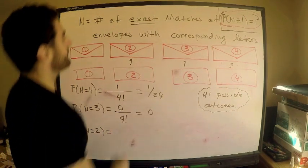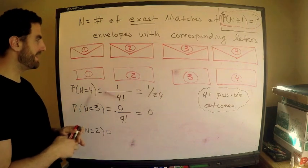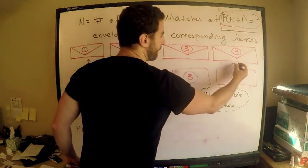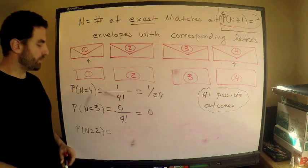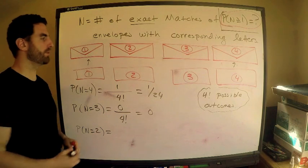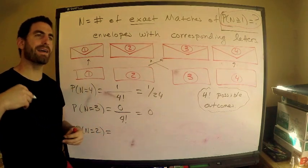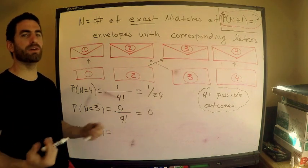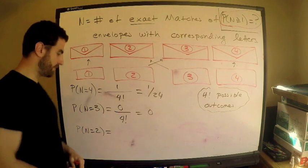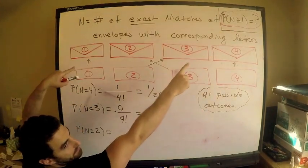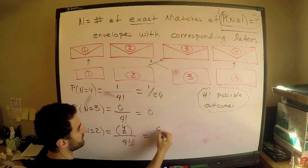Now P(N=2). An example: say one goes to one and four goes to four. What are the choices for two and three? Since there are exactly two matches, two must go to three and three must go to two — they have no choice. No matter which two letters I force to match correctly, the other two are completely determined. So this comes down to how many ways I can choose 2 from 4: that's C(4,2) = 6. So P(N=2) = 6/24.